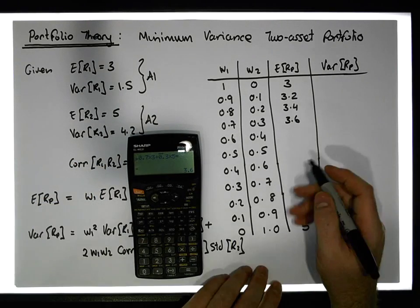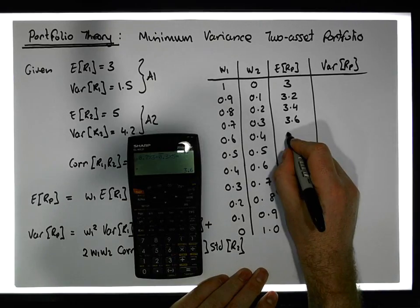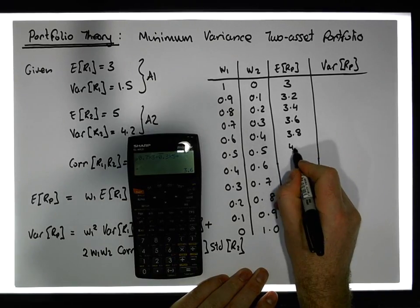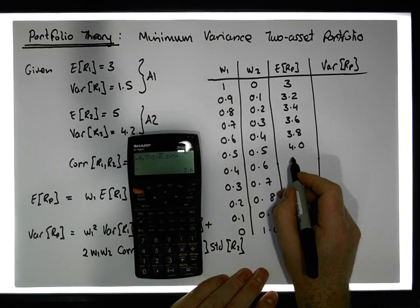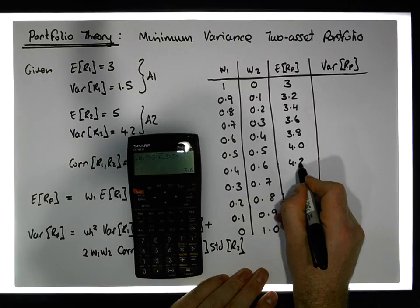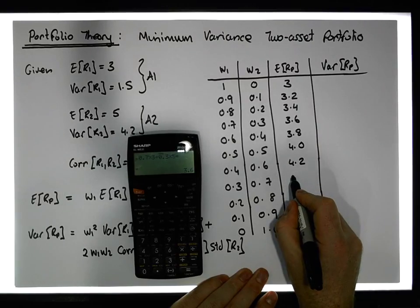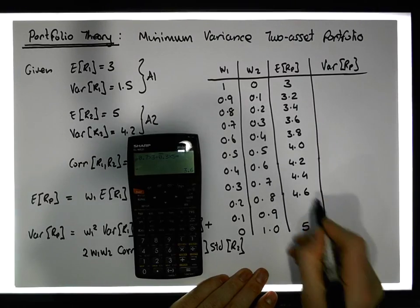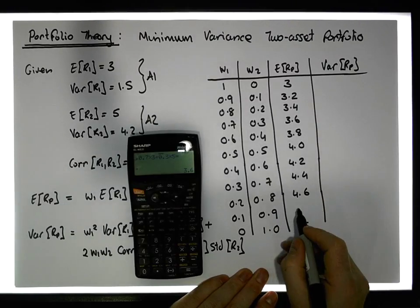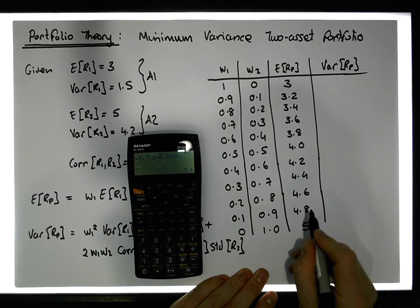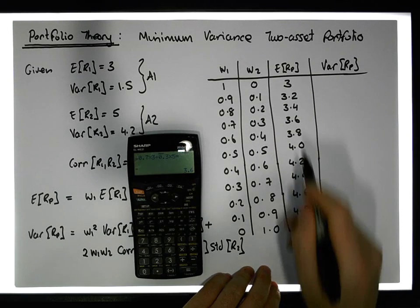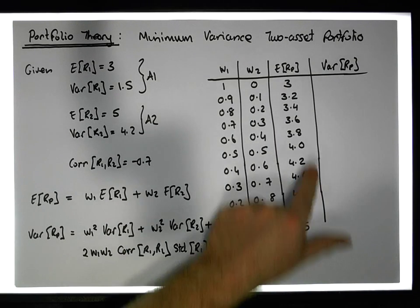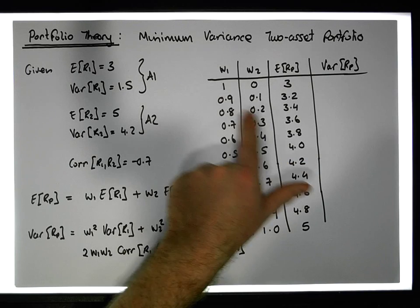Continuing in this fashion — I've done these out already — we have 3.8, 4.0, 4.2, 4.4, 4.6, and 4.8 as the expected return for each of these particular possible portfolios. We have now calculated our returns for all of these possible portfolios.